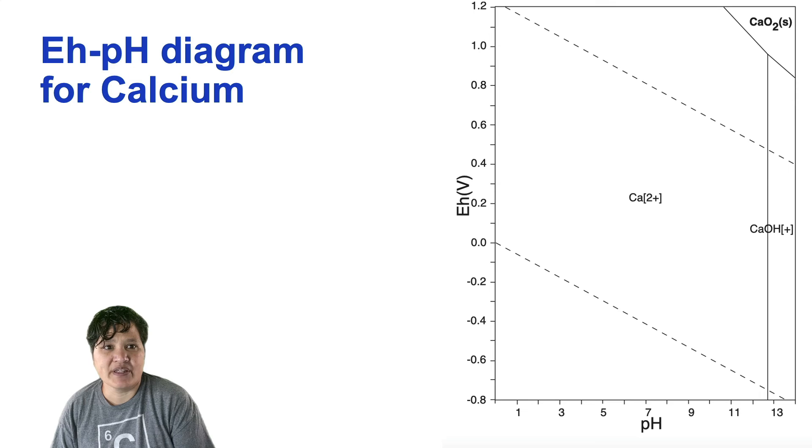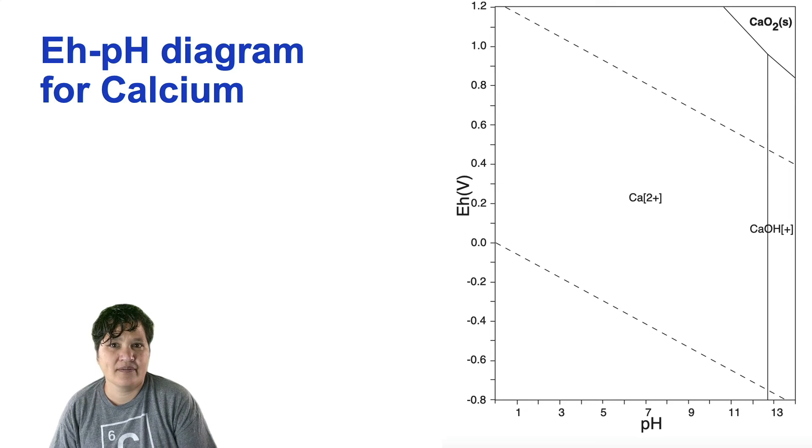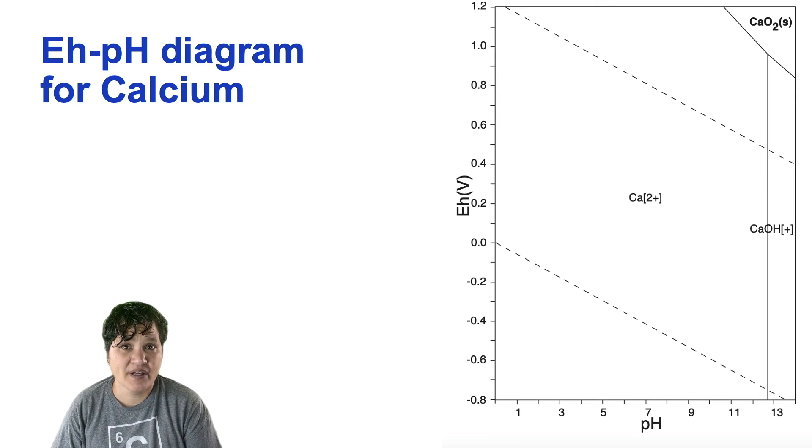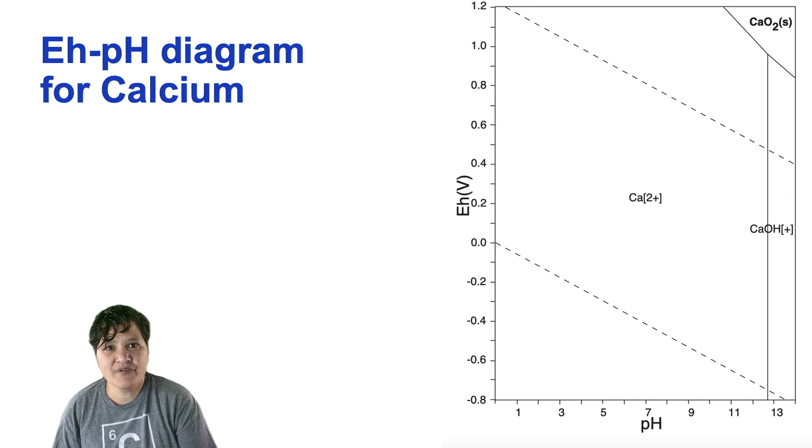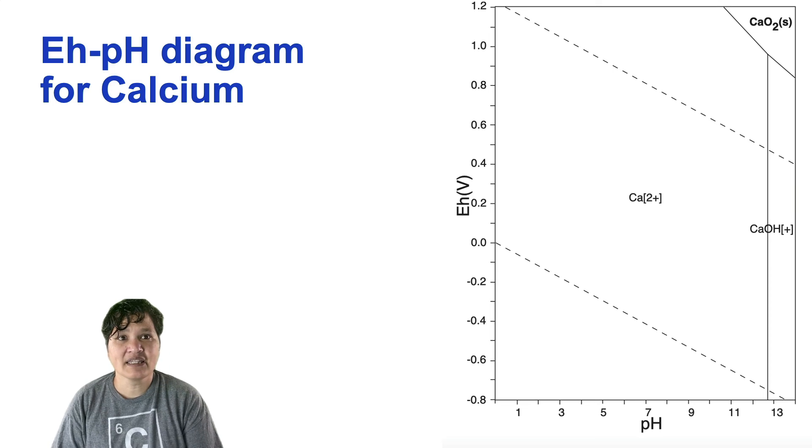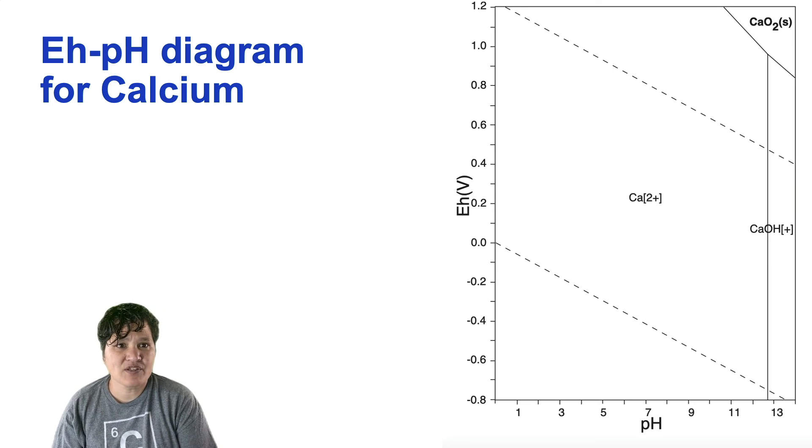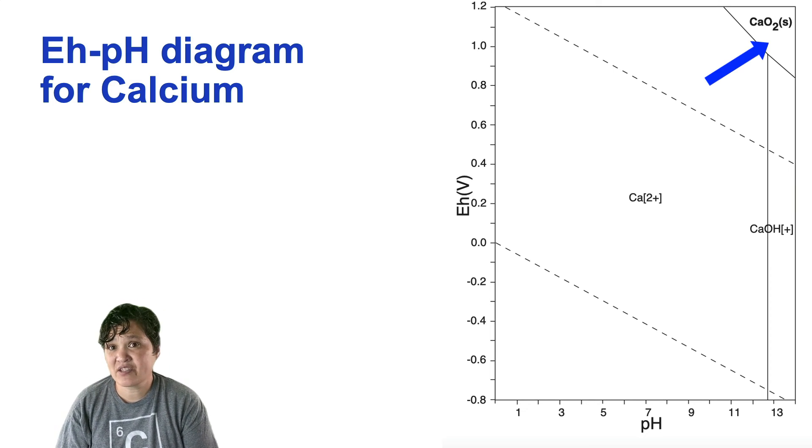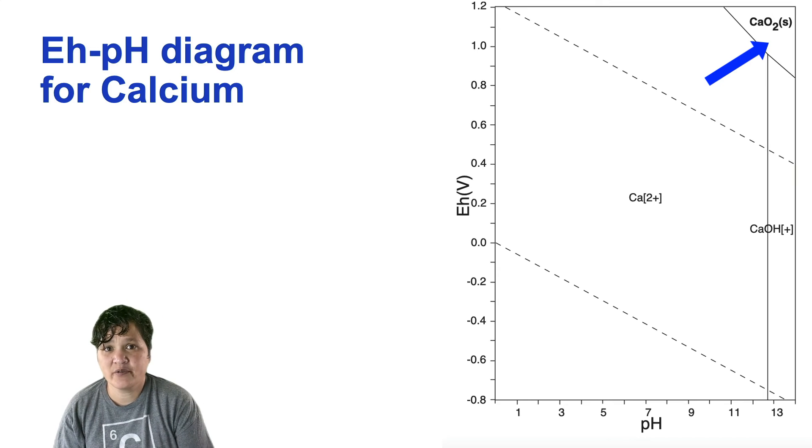We've spent a lot of time on the EH-PH diagram for sulfur, so it's time to look at a few more. Here's one for calcium. A couple of things I want you to notice. First, calcium is always in the plus 2 oxidation state, unless it's not aqueous. Calcium in the plus 4 oxidation state up here is a solid, so it wouldn't occur in aqueous solution.